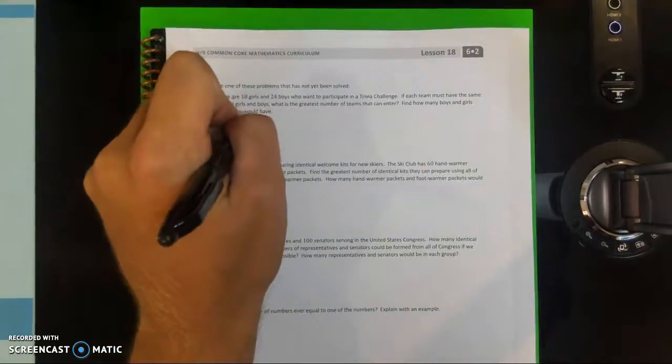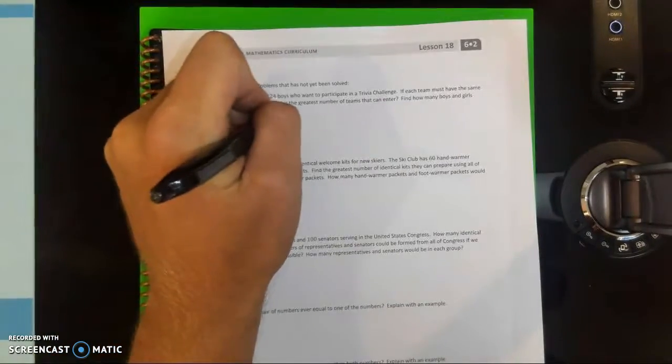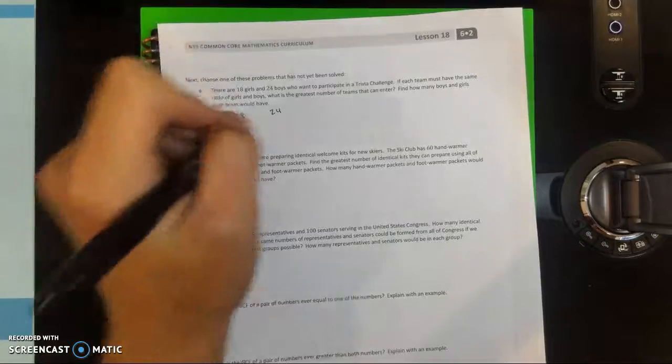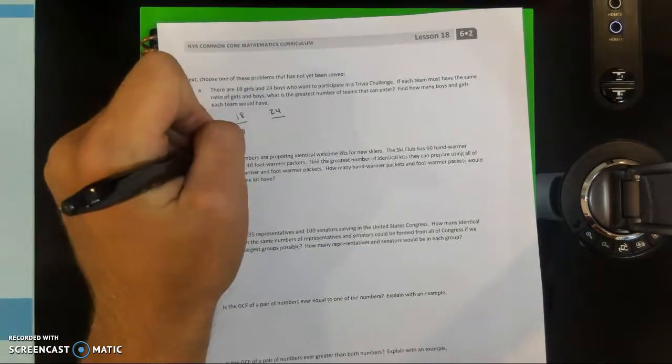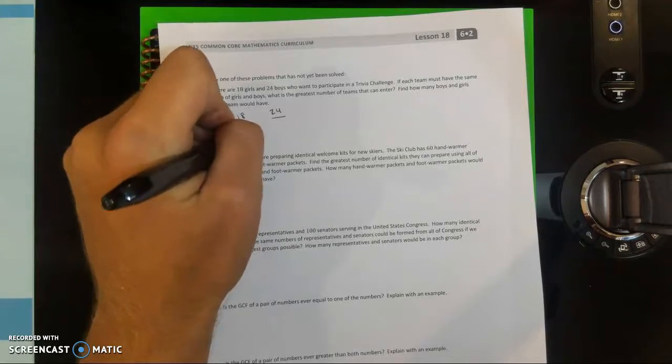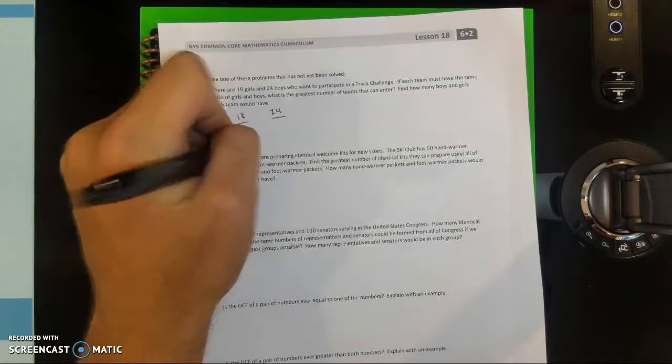We can break that down into each of the separate numbers of 18 and 24 and break it down into their multiples. So we have 1 times 18, 2 times 9, and 3 times 6.